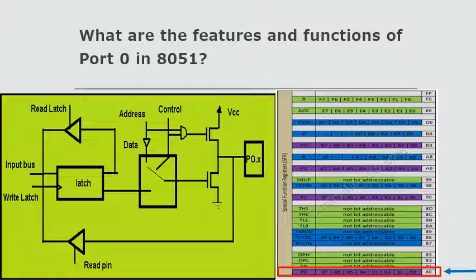Port 0 of AT51 has two main functions: to be used as a simple input-output port, and to access external memory in conjunction with Port 2. When we use Port 0 as an input port, the internal latch should know that it is being used for input, and thus a digital one, i.e., FFH, is written at port address ATH. This turns off the transistor, causing the pin to float in high impedance state, connecting it to the input buffer.